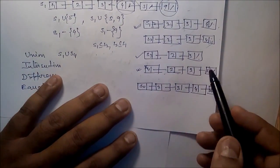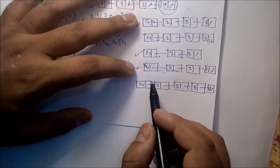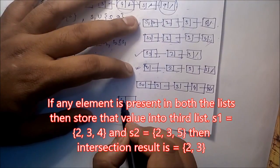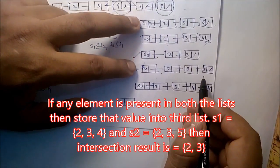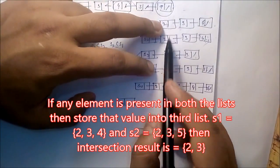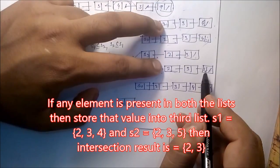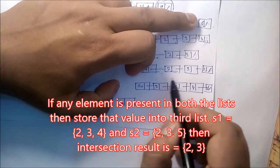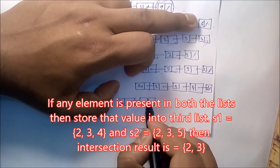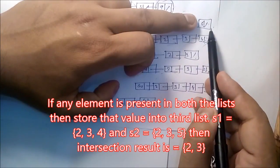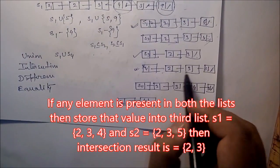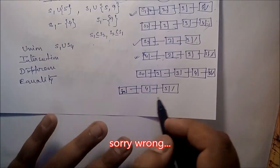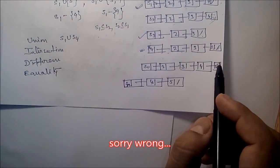For intersection, we have to identify the common part. For s1 intersection s4, process both lists simultaneously: two is there, yes; three is there, yes; four is not there — this list is exhausted. The non-processed node five is not in s1, so the intersection result contains the common elements two and three.